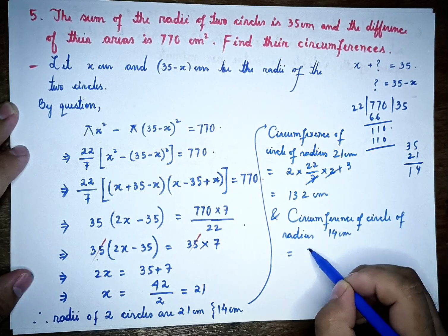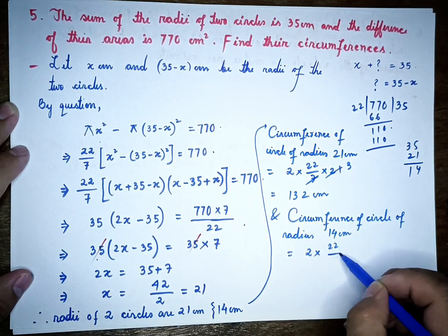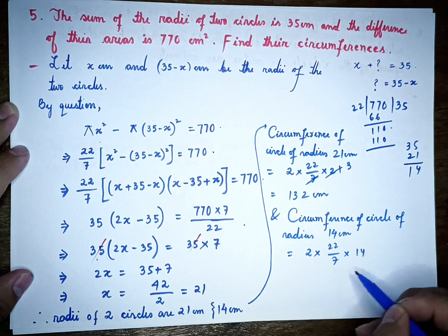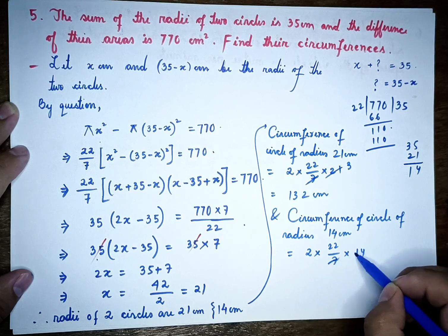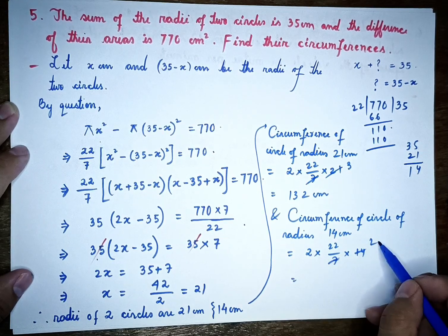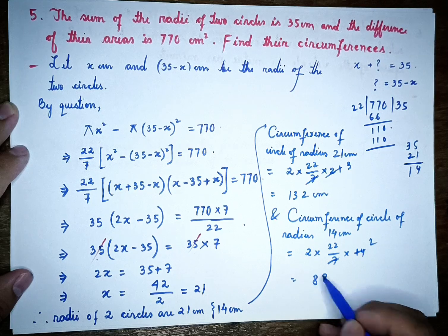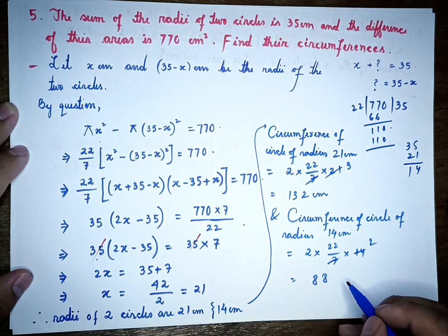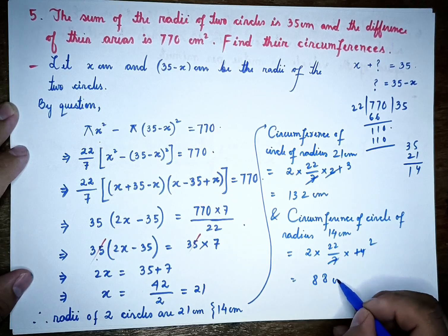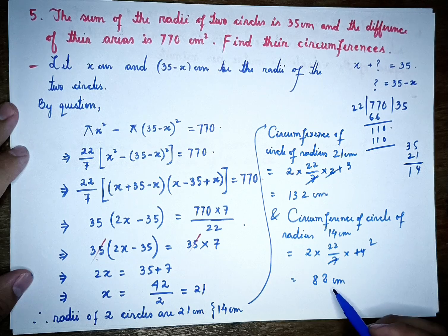The circumference of the circle with radius 14 cm equals 2 times 22 by 7 times 14. Since 14 divided by 7 is 2, we get 2 times 22 times 4 equals 88 cm. So the circumferences are 132 cm and 88 cm.